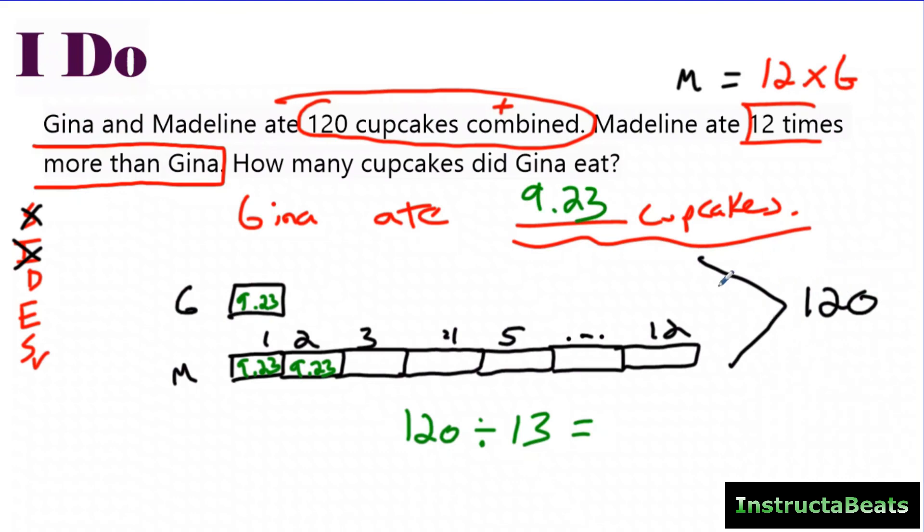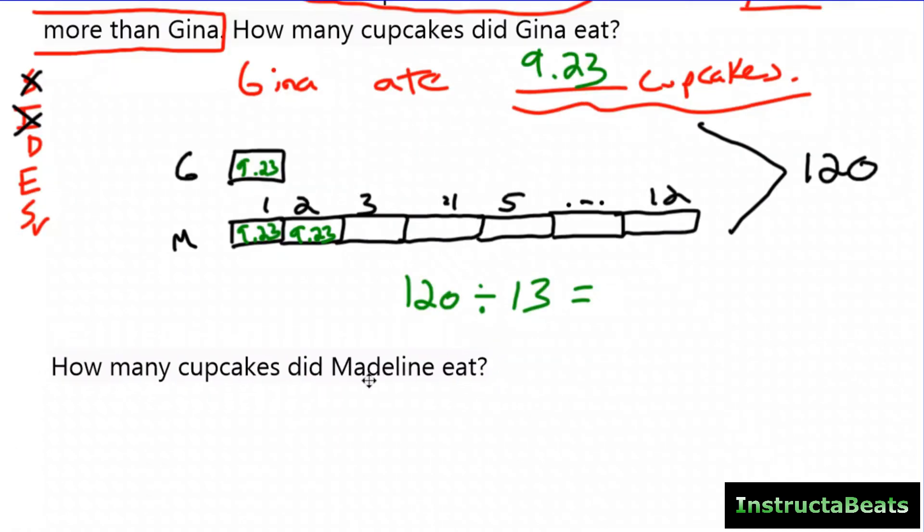And so that's how you would do this. It's the same exact tape diagram. You're just dividing it into equal groups. The other question might ask you, how many cupcakes did Madeline eat? So now that you figured out that each one is 9 and 23 hundredths, you could take that and multiply it by 12. And you figure out that she ate 110 cupcakes and 76 hundredths of another one.